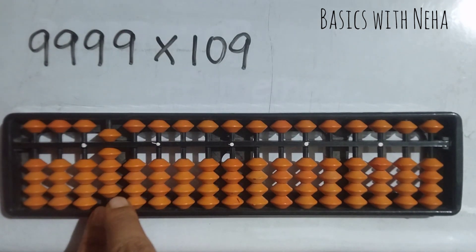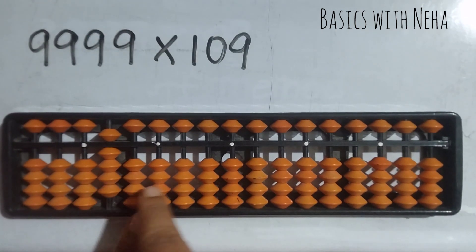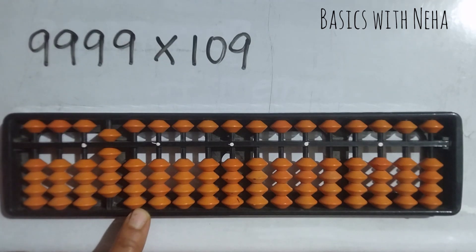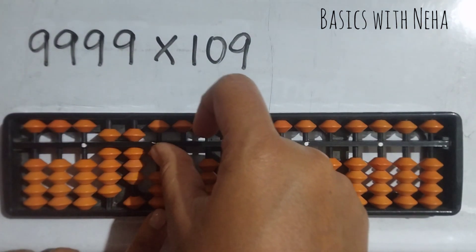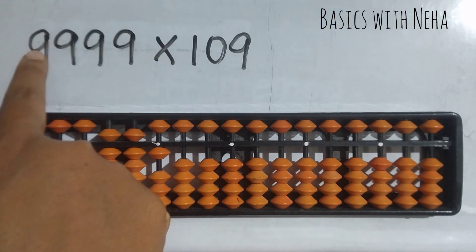Again, a single digit should be followed by a zero, and you are going to start from the same rod. The rod you stop is the rod you start. It will be zero zero. Nine nines are 81, so place eight and place one. We are done with the first nine.